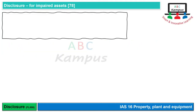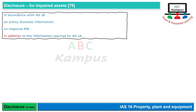Impaired assets ke liye IAS 36 ke mutabiq disclosures dene hote hain. IAS 16 mein impairment se related amounts ke ilaawa IAS 36 ki bhi kuch requirements hain — for example kaunsa indicator of impairment tha, kaunse factors the jinki wajah se impairment hui ya reversal of impairment hua.